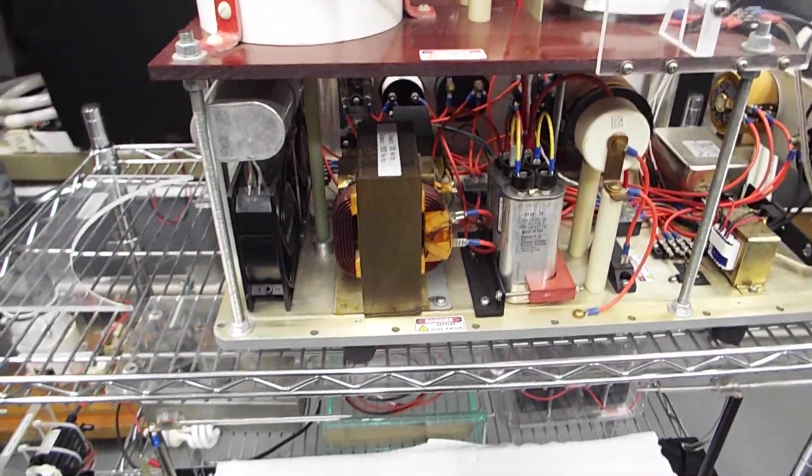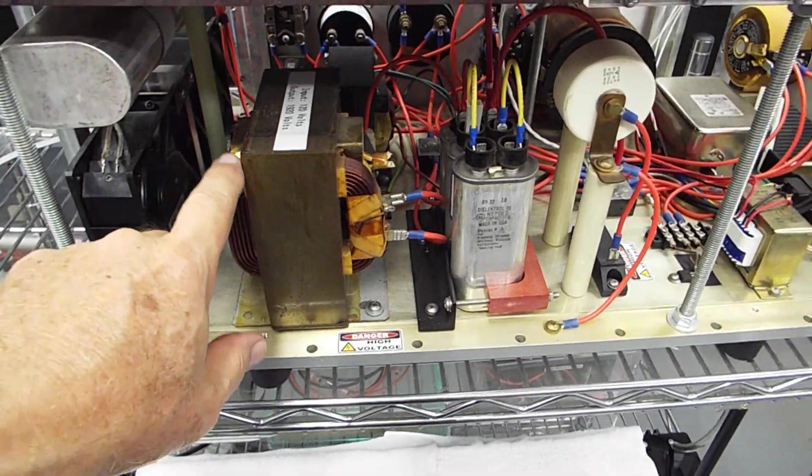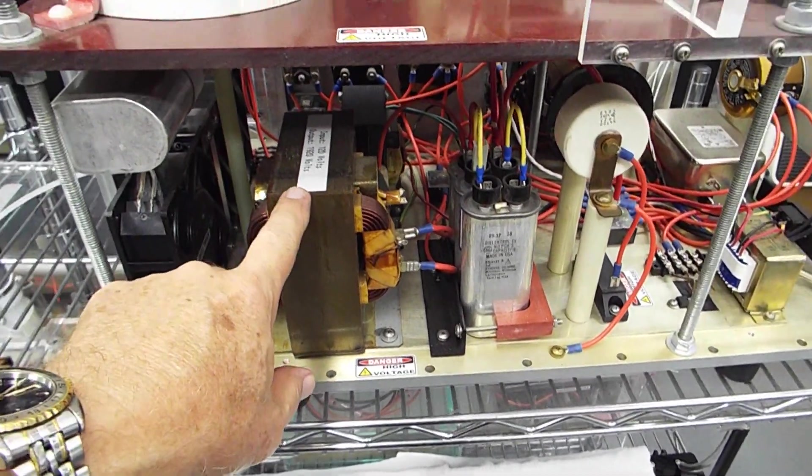So this is looking at it from the other side. Here's the cooling fan. One of them. Microwave oven transformer.